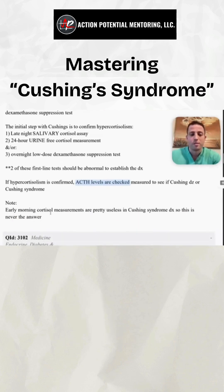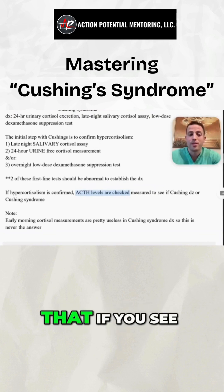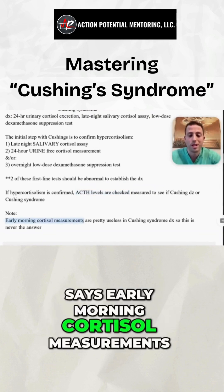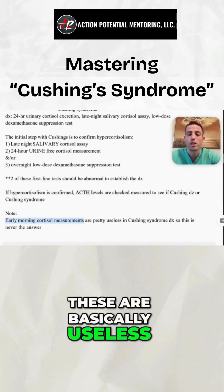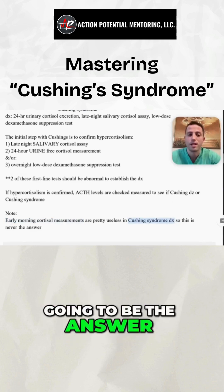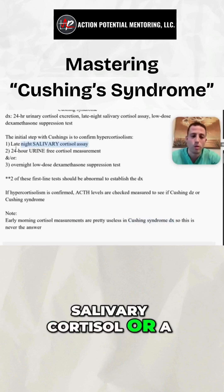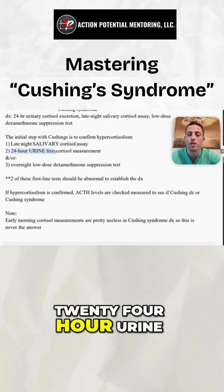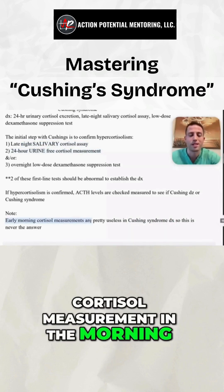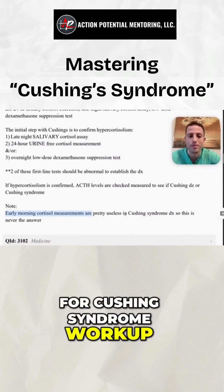Something really important to know: if you see an answer choice that says early morning cortisol measurements, these are basically useless in diagnosing Cushing's syndrome — that is never going to be the answer. You want to do either a late-night salivary cortisol or a 24-hour urine-free cortisol. Never just check the cortisol measurement in the morning; that's not going to be the correct answer for a Cushing's syndrome workup.